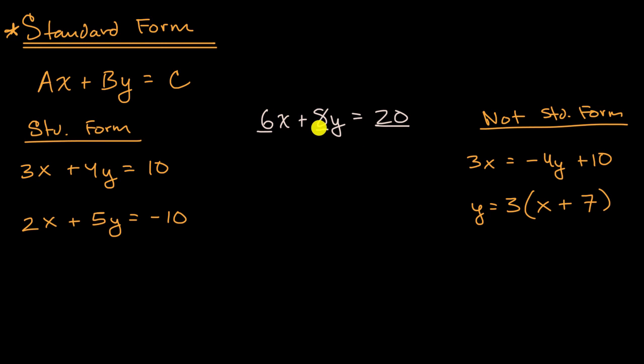And here, 6, 8, and 20, they're all divisible by 2. And so some folks would argue that this is not standard form, and to get it into standard form, you would divide all of these by 2, and if you did, you would get this equation here.